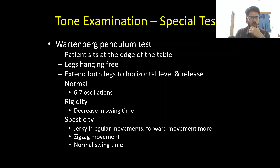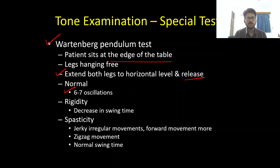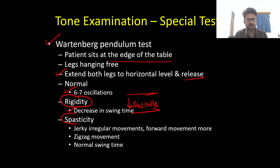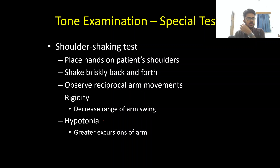The Wartenberg pendulum test: the patient is seated at the edge of the table with legs dangling free. Both legs are extended to a horizontal level and then suddenly released. Normally the leg drops and has around six to seven oscillations. With extrapyramidal involvement — rigidity — there is a decrease in swing time. With spasticity — pyramidal involvement — the swing time is normal, but the pendular movement is jerky and irregular, with the forward part more pronounced, giving a zigzag-type movement.